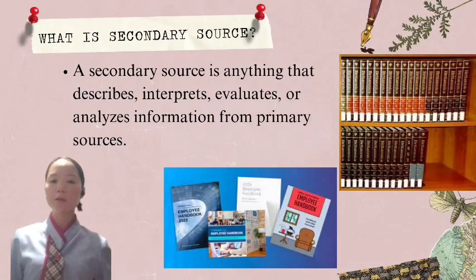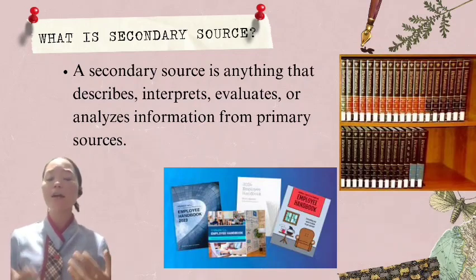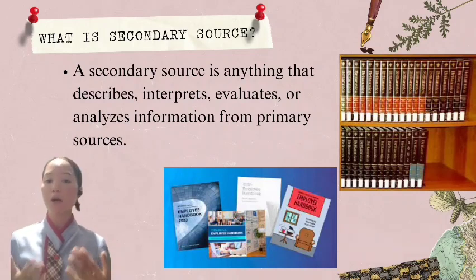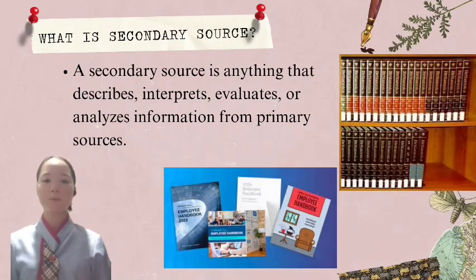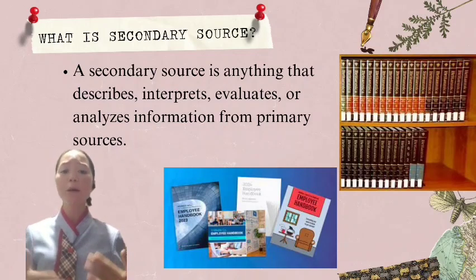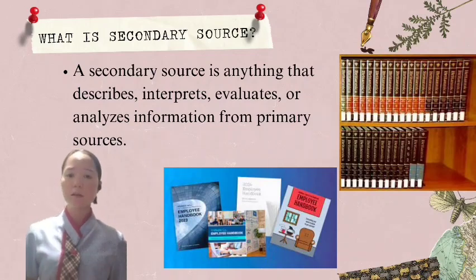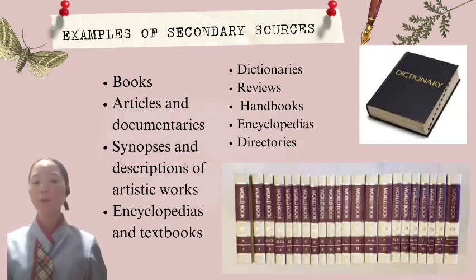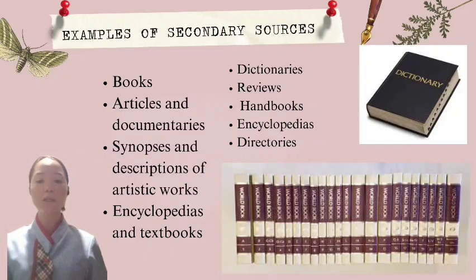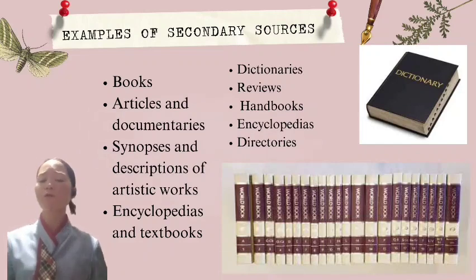Now let us move on to secondary sources. A secondary source is anything that describes, interprets, evaluates, or analyzes information from primary sources. They are created after the time period being studied, or by individuals who did not directly experience the events they discuss. Secondary sources build upon primary sources and offer analysis, commentary, and synthesis of the information found in primary sources. Examples of secondary sources include dictionaries, reviews, handbooks, encyclopedias, directories, books, articles, and documentaries that synthesize information on a topic, synopsis and descriptions of artistic works, and encyclopedias and textbooks that summarize information and ideas.